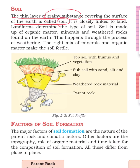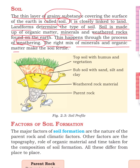Soil is closely linked to land. Landforms determine the type of soil. Soil is made up of organic matter, minerals, and weathered rocks found on the earth. This happens through the process of weathering. The right mix of minerals and organic matter makes the soil fertile.